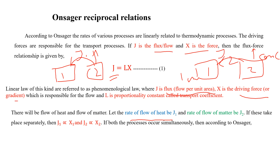The flow will continue until equilibrium exists between the two systems. If there is a flow of heat, it is called J1, and when there is a flow of materials, concentrations, or matter, it is called J2.